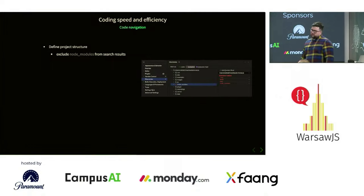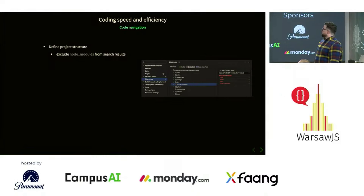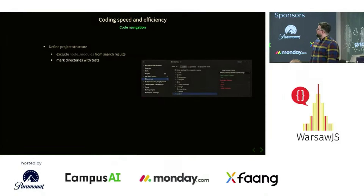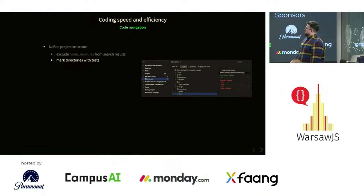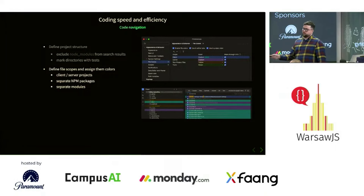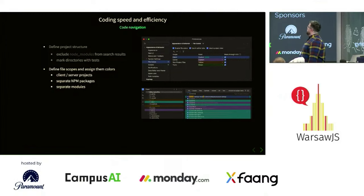Another thing: code navigation. If you want a very good experience in your IDE, define a project structure — not many people do that. You can share that configuration with your team. Exclude node_modules from search results — it will improve your life. Mark directories with tests so when you're searching in your IDE, you'll see these are tests and not necessarily what you're looking for. Define file scopes for different projects — if you have separate parts of code for front and backend or npm packages, color them. Make them colorful.